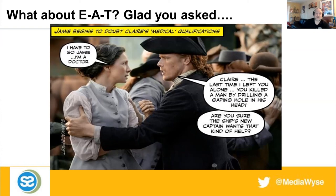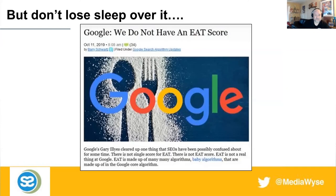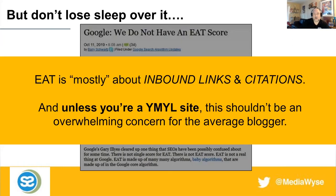EAT can in many cases be how others respond to your content. Understanding EAT is great, but don't lose any sleep over it — Google has said repeatedly that they do not have an EAT score. The Google quality rater guidelines are really where they want the algorithms to go; they're a check on what we want to see show up in the algorithms. It's also been found that over the last several months, EAT is mostly about inbound links and citations. Unless you're a 'your money or your life' site, this shouldn't be an overwhelming concern for the average blogger.